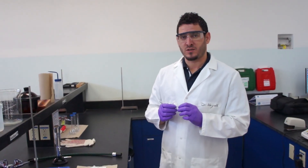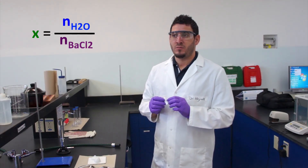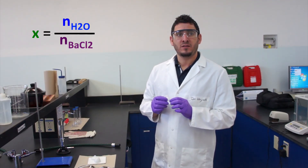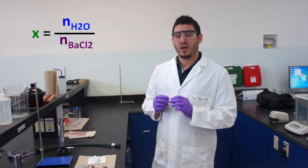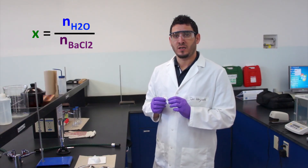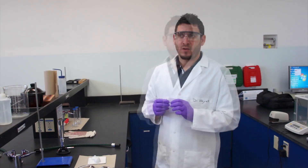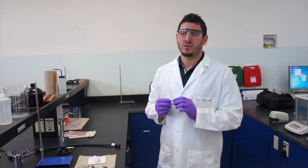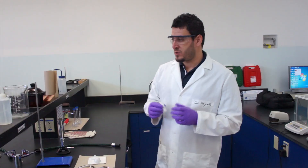To determine x, we will see it in detail in the post-lab discussion. But quickly, x represents the molar ratio between water and the anhydrous barium chloride, which is BaCl₂. So the objective is to determine the number of moles of water and the number of moles of anhydrous BaCl₂. We need to find the masses of water and of anhydrous BaCl₂.